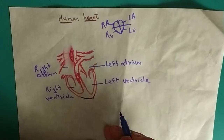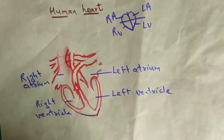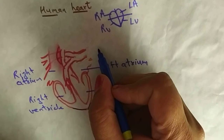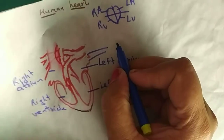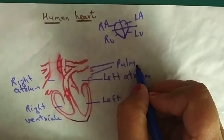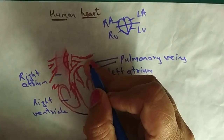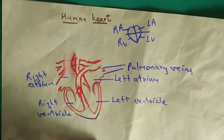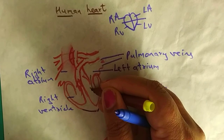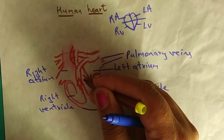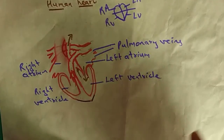When blood is supplied to the heart, it comes from the lungs through these two veins called pulmonary veins. From the lungs the blood reaches the heart and enters the left atrium. From the left atrium it goes into the left ventricle. From the left ventricle it passes through the wall and out through a tube or pipe-like structure called the aorta.